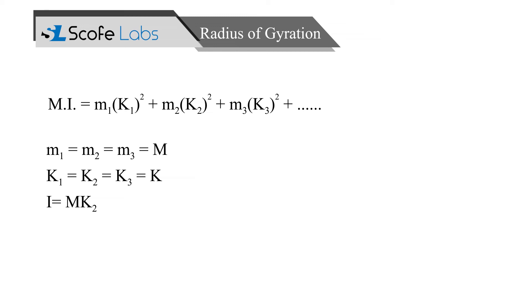The equation becomes I is product of mass m and distance k. Here, distance k is called the radius of gyration.